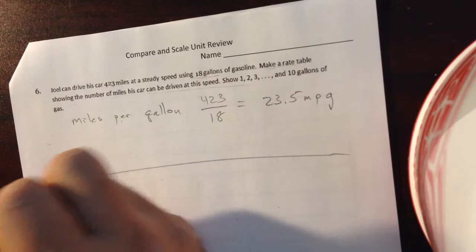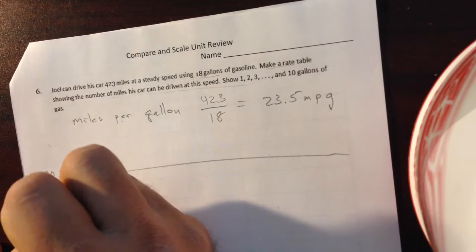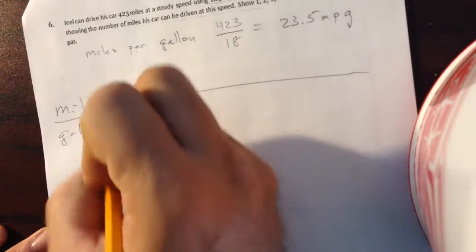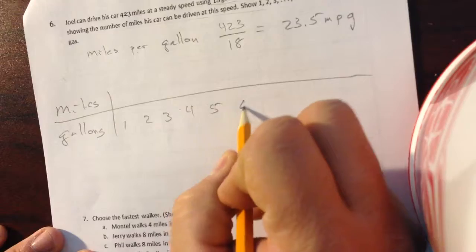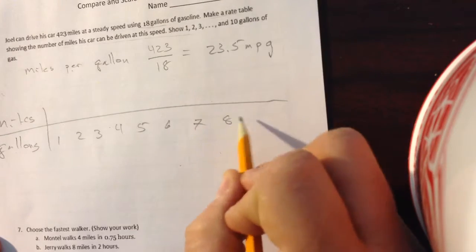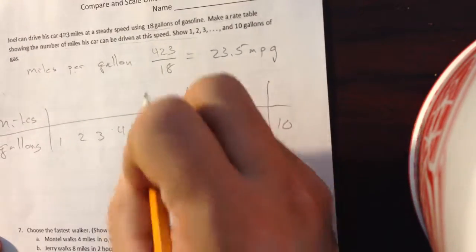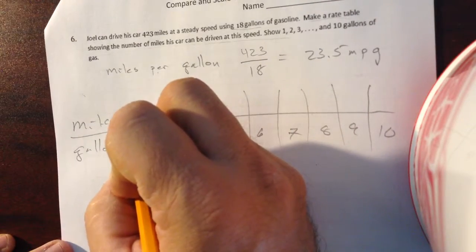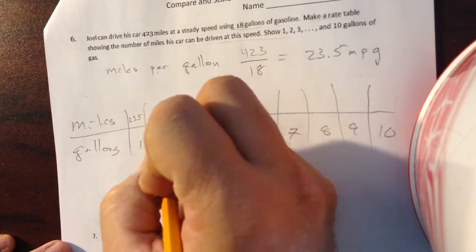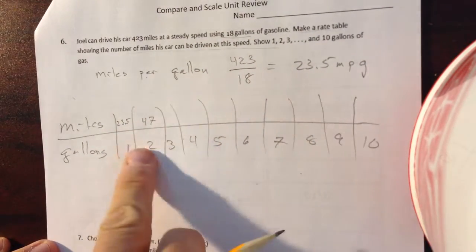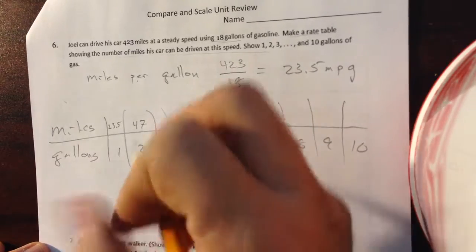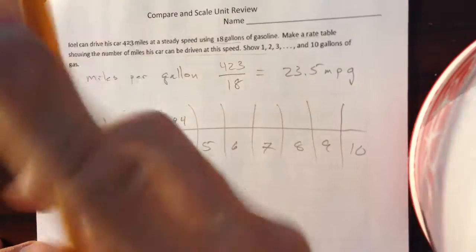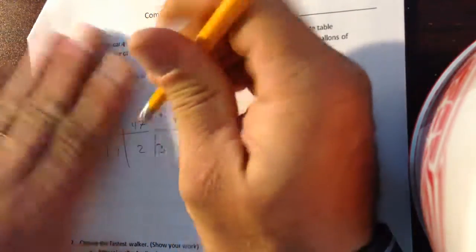So, when I'm making my table, miles, gallons, my gallons are going to be 1, 2, 3, 4, 5, 6, 7, 8, 9, 10. And this is 23.5. 23.5 times 2, 47. 23.5 times 4, 94. 23.5 times 3, I should have left myself a little bit more room here. I was just quick and sloppy.